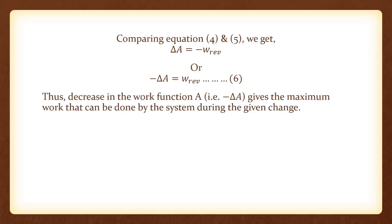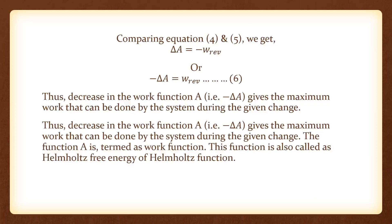This decrease in work function A gives the maximum work that can be done by the system during a change. If delta A is negative, the process is spontaneous; if delta A is positive, the process is non-spontaneous in nature. This new function A is called the Helmholtz function or Helmholtz free energy function.